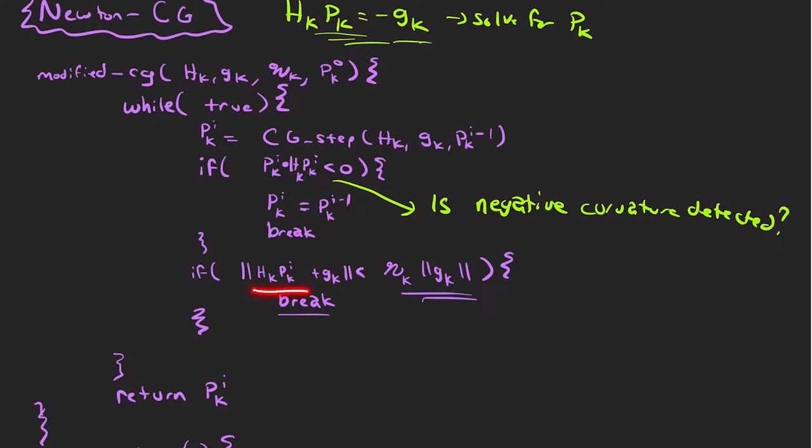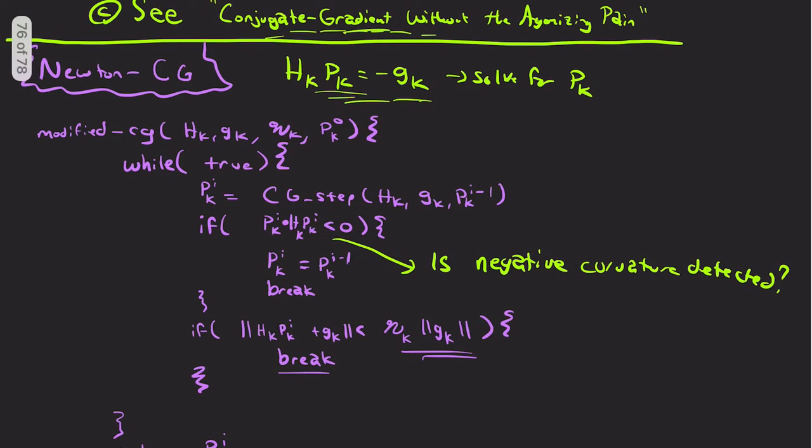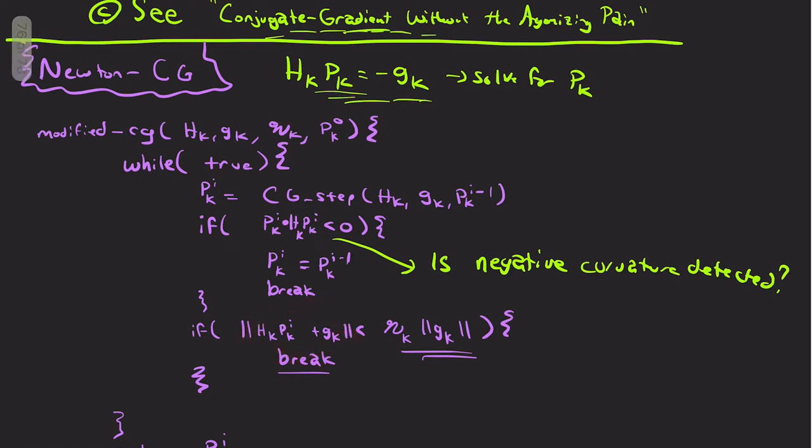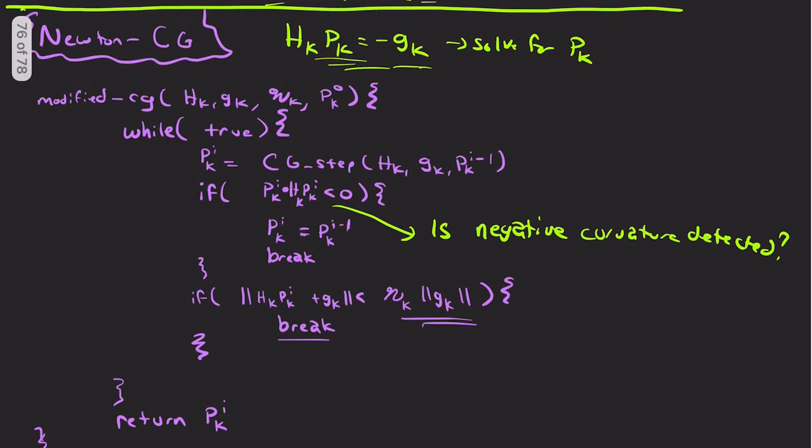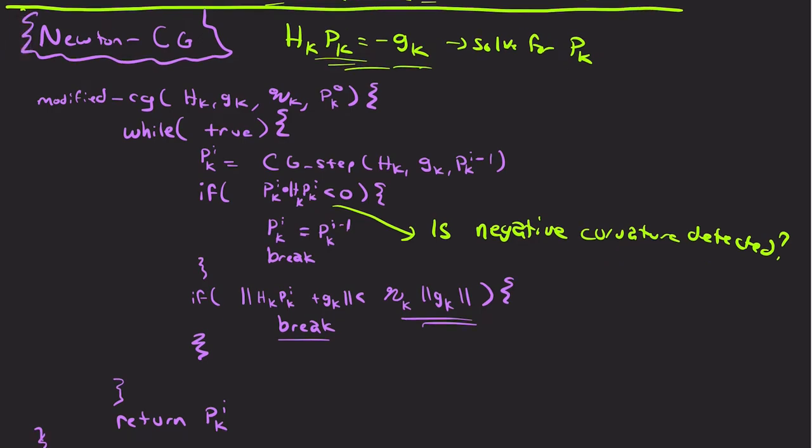Otherwise, if we hit tolerance, we also break. Because this right here, this ends up being the residual. Just add GK onto the other side. We want this to be close to zero. And that's basically all that Newton CG is.